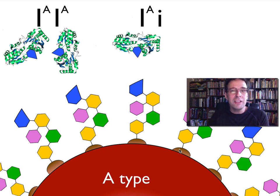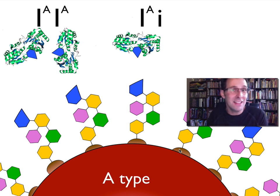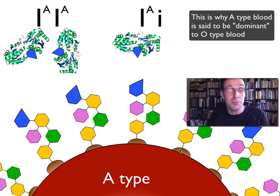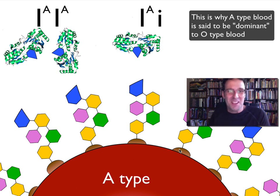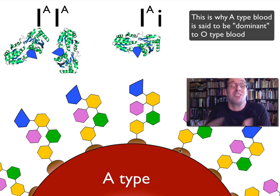Even if only one of your parents gives you the Big I-A allele, even though you're only going to be producing half as much of the enzyme, remember enzymes are reusable — it only takes one enzyme. So it might happen at half the speed, or it might take twice as long, but the enzymes will still eventually convert all those H-antigens into A-antigens.